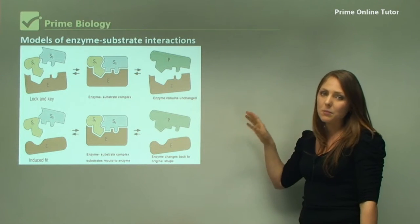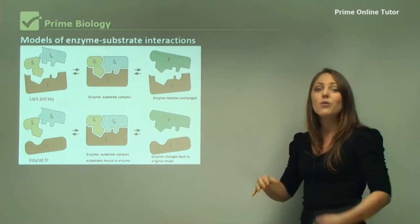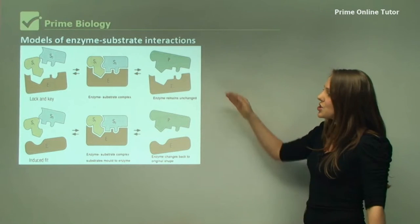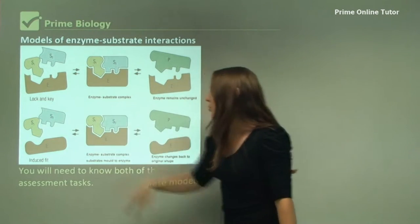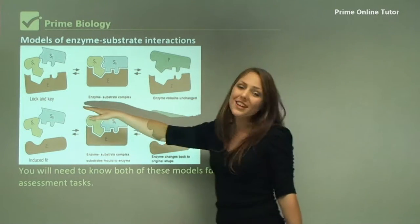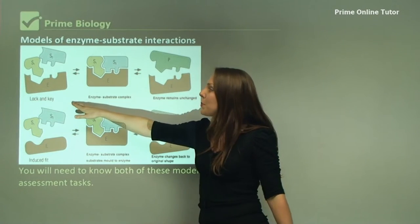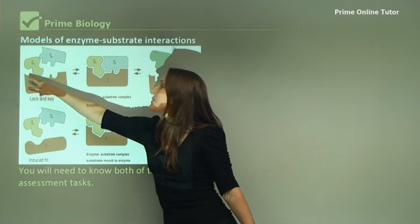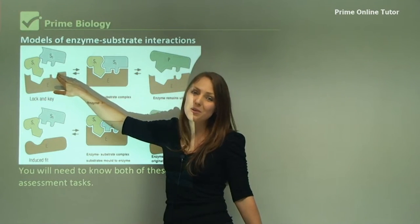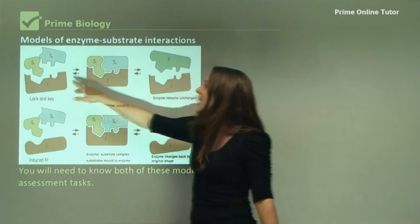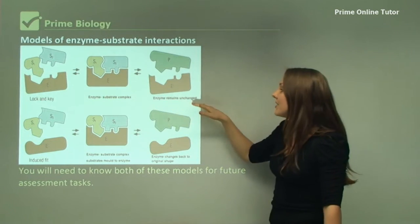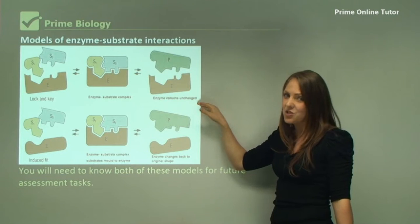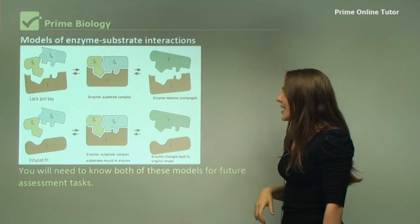This here is a fantastic model that you can use for your end examination. It shows here both the lock and key and induced fit. For your assessment tasks you need to know both of them. At the top here we have a lock and key which has a specific active site shape to fit the substrates, and it goes to make the enzyme substrate complex, and the enzyme remains unchanged throughout the whole reaction.